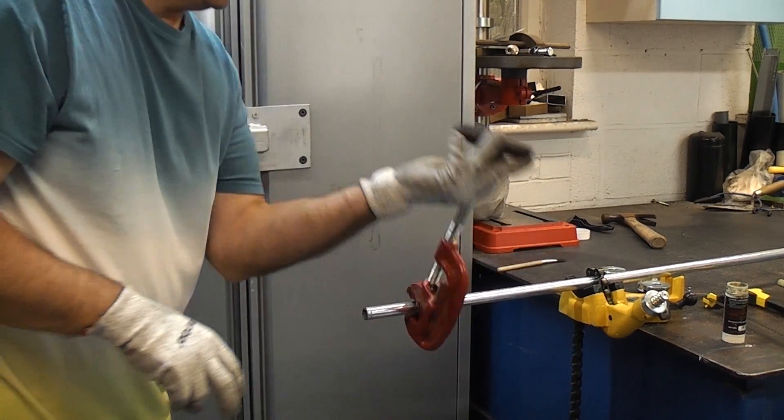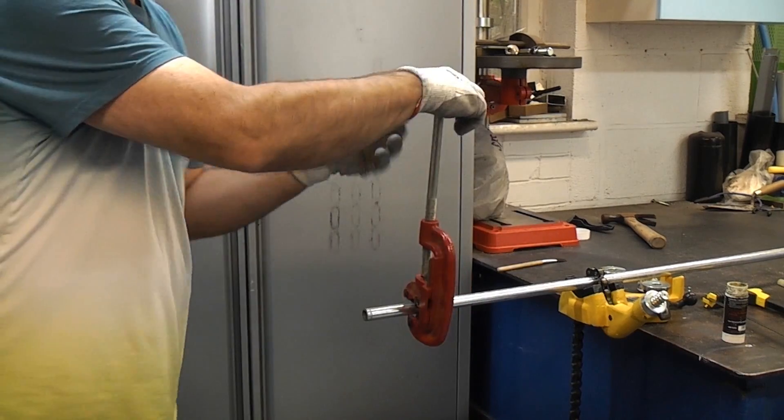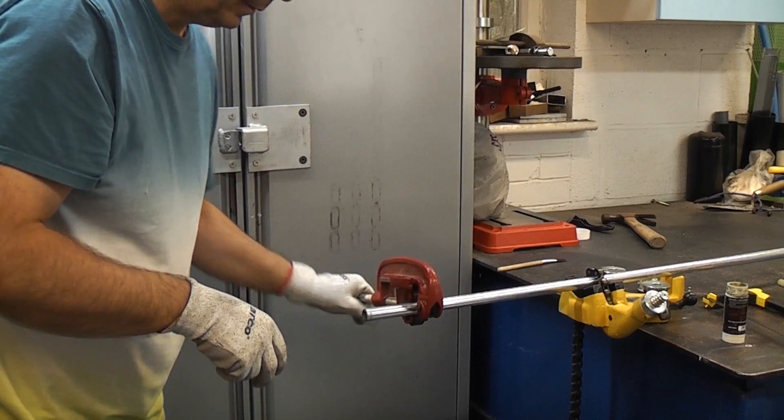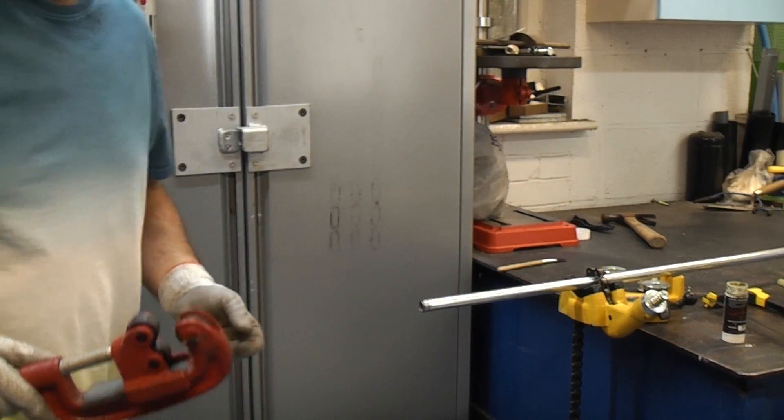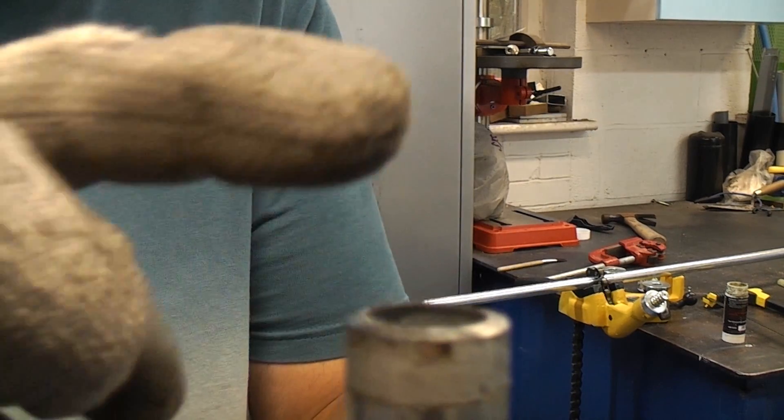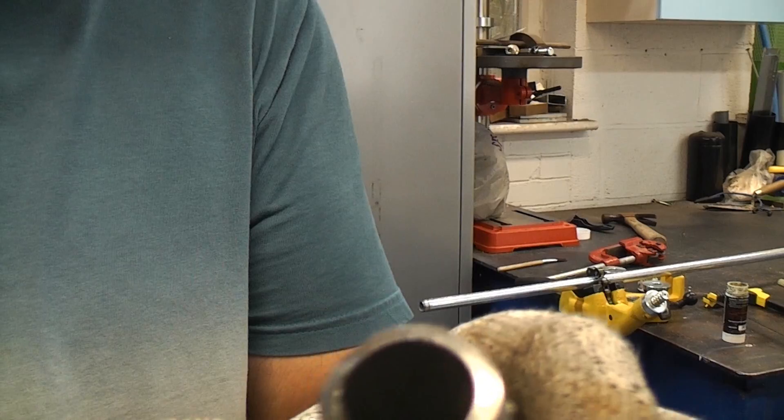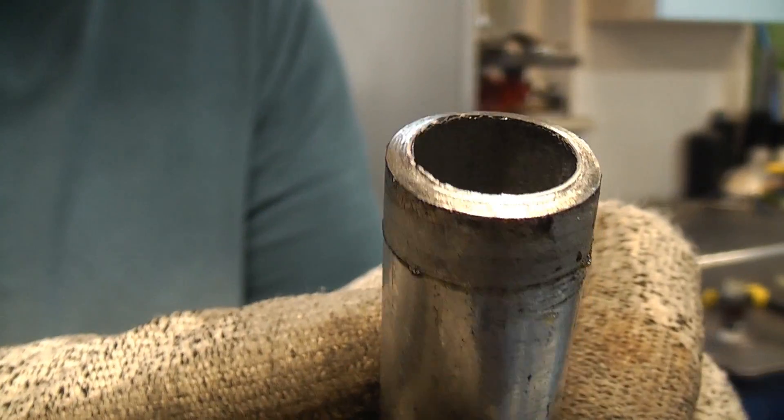These are used a lot on site for cutting steel pipe. As you can see it cuts it very quickly and effortlessly. And the beauty of these is that they give you a very straight cut, although they do tend to leave a burr on the inside there which we will remove later.